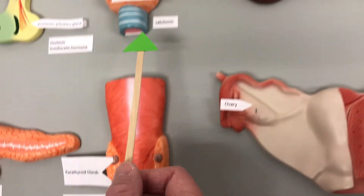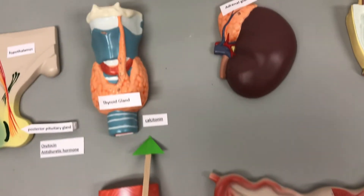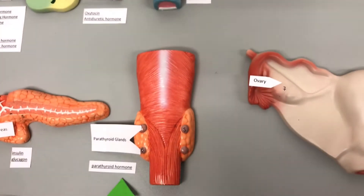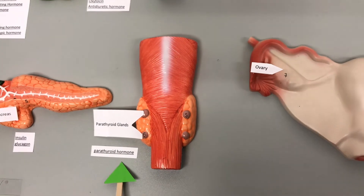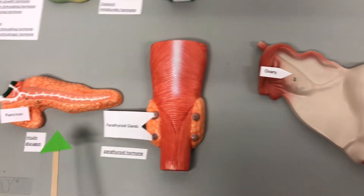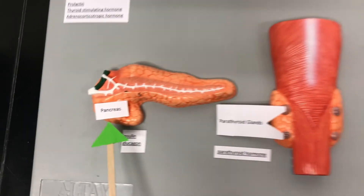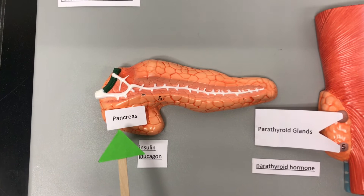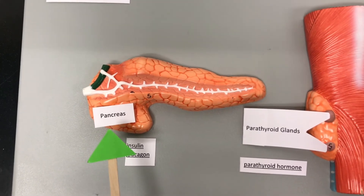So calcitonin and parathyroid hormone are opposite hormones. The pancreas is both an endocrine and an exocrine gland.